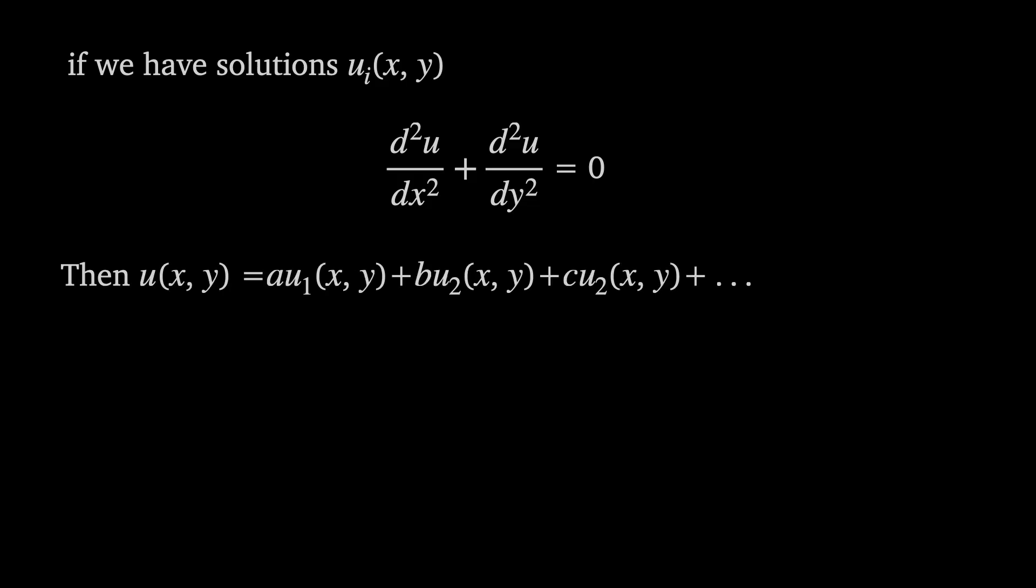Laplace also found that if you have more than one solution you can combine them in a series with arbitrary constants that I've written here as a, b and c etc. This is called a linear combination of solutions. So for example taking the earlier general solution we can form a new one by taking a linear combination of a set of them with different coefficients k1, k2, k3 etc.